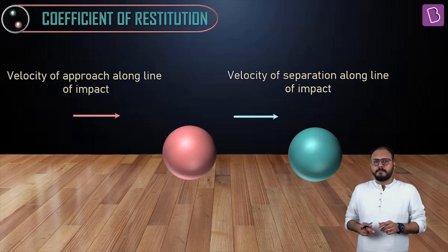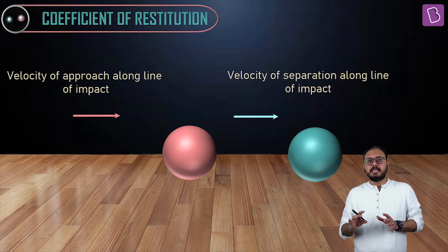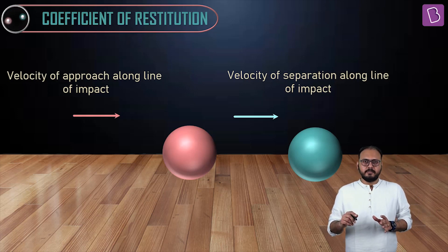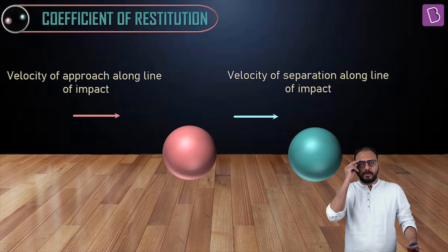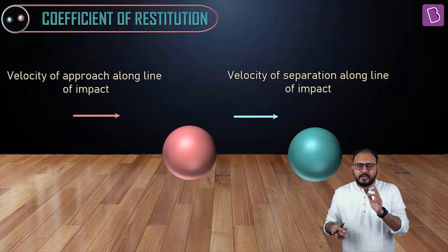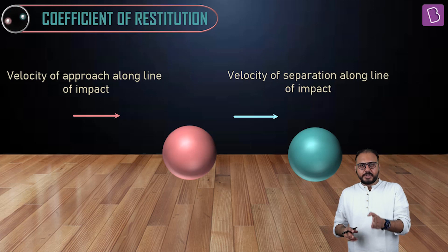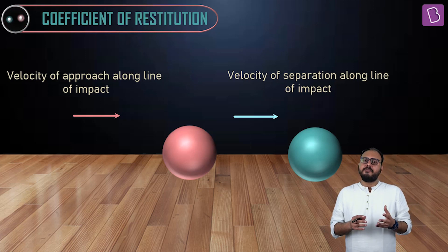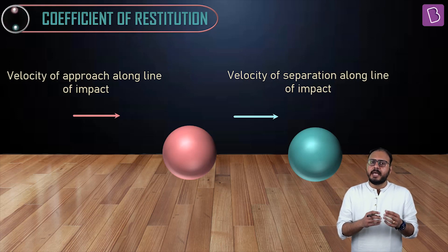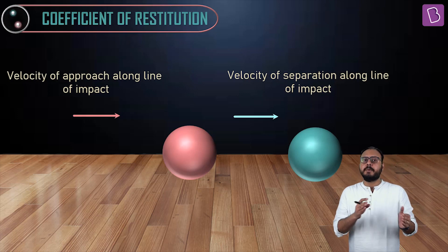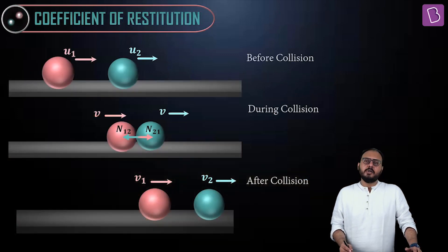Do you also agree that it affects how they separate from each other? In other words, deformation and reformation can be intuitively related. Deformation and reformation together can be intuitively related to how fast they approach before collision and how fast they separate after collision. And that is the brilliance of Newton's law.